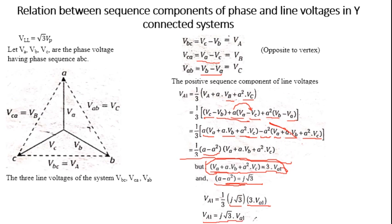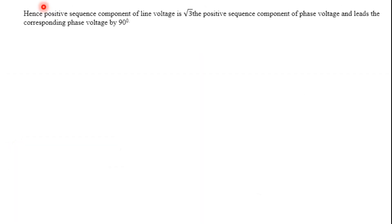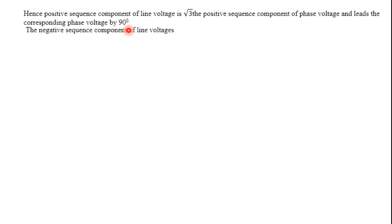So the positive sequence component of the line voltage is root 3 times the positive sequence component of the phase voltage, and it leads the corresponding phase voltage by 90 degrees — meaning it is advanced by an angle of 90 degrees with respect to the phase voltage.